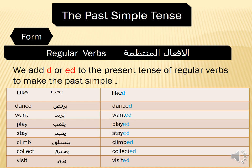Regular verbs are the verbs which we add D or ED to the present to get the past simple tense. الأفعال المنتظمة هي الأفعال التي نضيف لها D أو ED إلى المضارع لتتحول إلى ماضي. But the irregular verbs have different forms — الأفعال الغير منتظمة لها صيغ مختلفة.